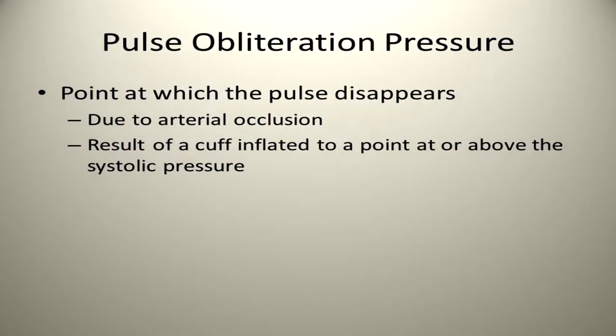A Doppler can also be used as an alternative to digit palpation to determine the pulse obliteration pressure. The pulse obliteration pressure is the point at which the pulse disappears due to the arterial occlusion that results from a blood pressure cuff inflated to a point at or above the systolic pressure. This technique is used to establish how high a blood pressure cuff should be inflated, and is also known as the maximal cuff inflation level.